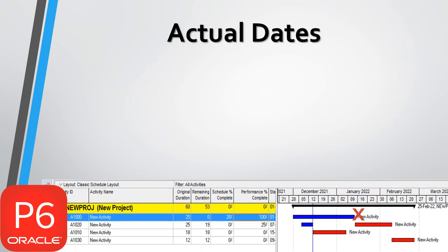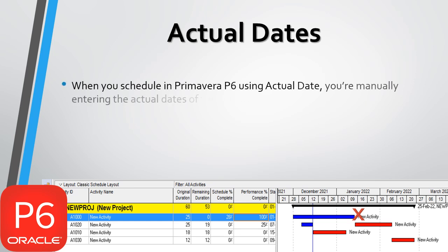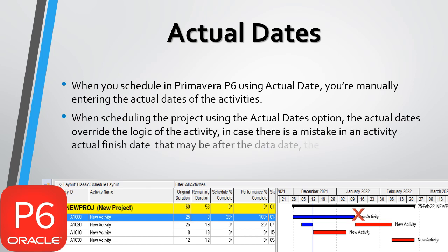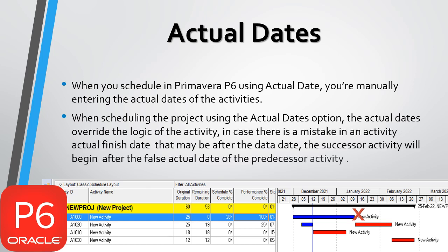Actual Dates: when you schedule in Primavera P6 using Actual Dates, you are manually entering the actual dates of the activities. When scheduling the project using the Actual Dates option, the actual dates override the logic of the activity. In case there is a mistake in an activity's actual finish date that may be after the data date, the successor activity will begin after the false actual date of the predecessor activity.